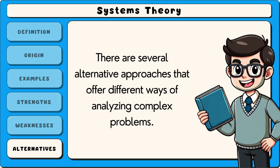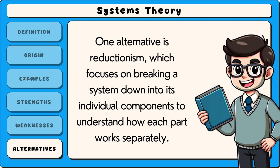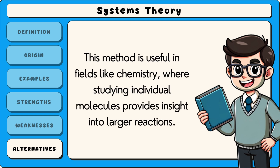There are several alternative approaches that offer different ways of analysing complex problems. One alternative is reductionism, which focuses on breaking a system down into its individual components to understand how each part works separately. This method is useful in fields like chemistry, where studying individual molecules provides insight into larger reactions.